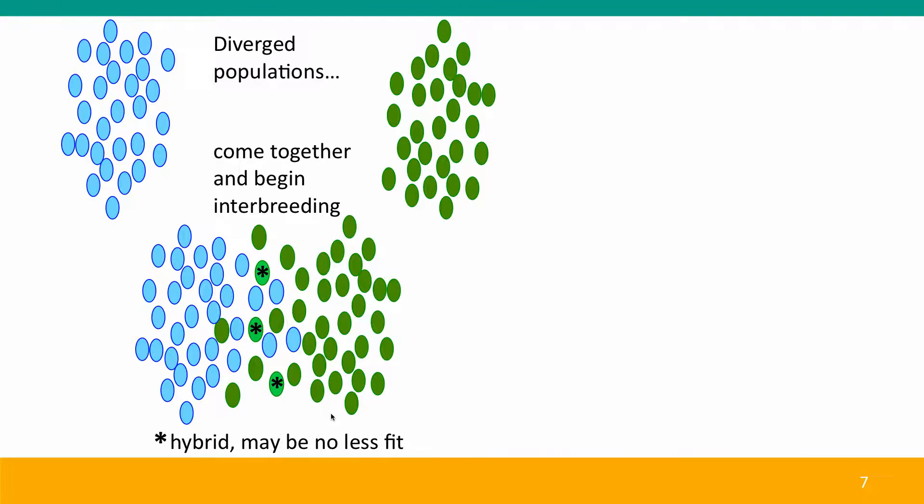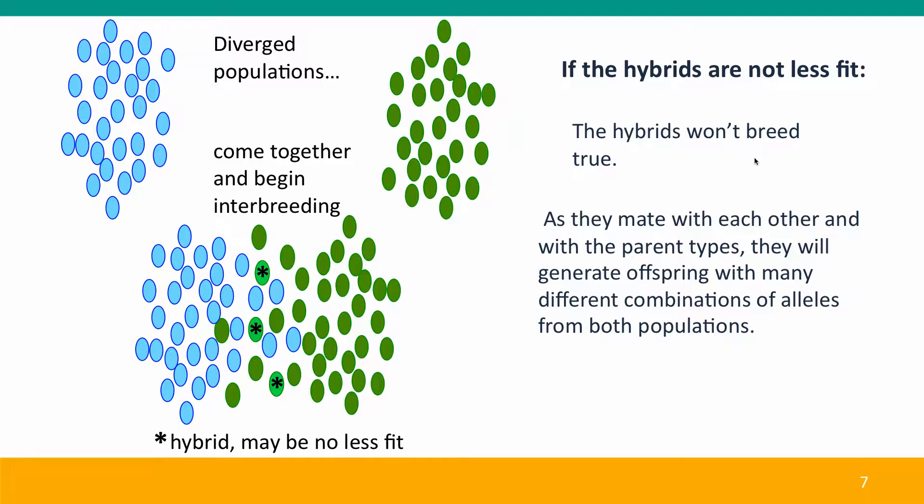On the other hand, if the hybrids are not less fit, or only a tiny bit less fit, then the hybrids won't breed true. Of course, hybrids never breed true, and as they mate with each other and back with the blue ones and the green ones, they're going to generate offspring with all different combinations of alleles from both populations, mixing them together, and the end result will be that the two diverged populations will probably merge back into a single species.